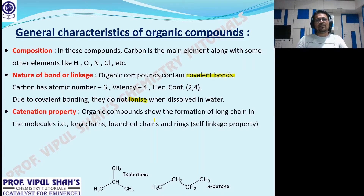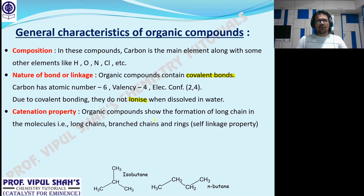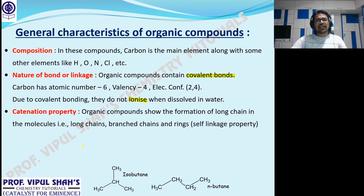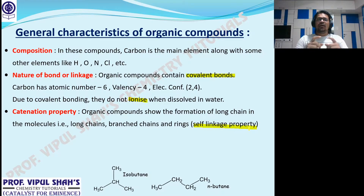Next, a very important feature: catenation. This is also one of the important properties. Catenation is the unique phenomenon of carbon forming long chains of compounds, either in a straight chain or in a branched manner with other carbon atoms. It's also called the self-linkage property. So in short, the meaning of this word is: carbon atoms forming long chains, either continuously or in a branched manner. That's called the catenation property.